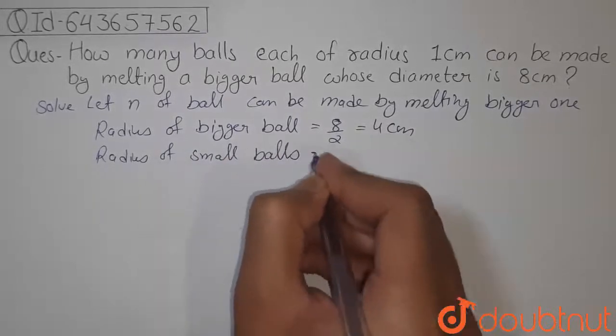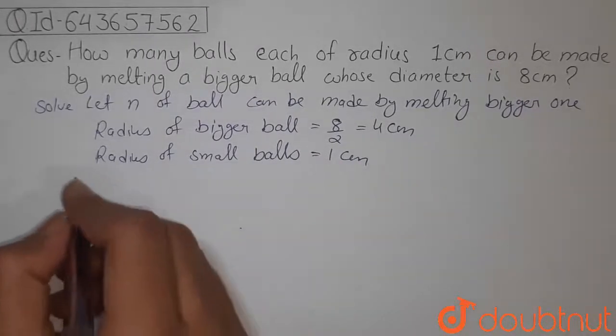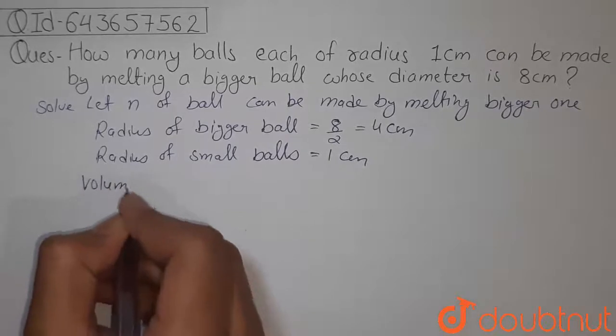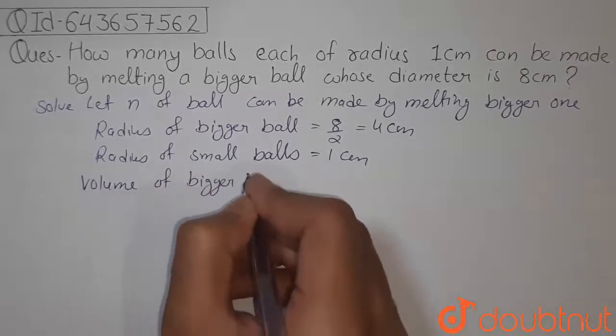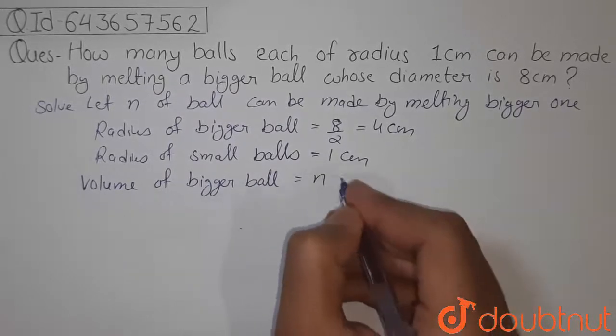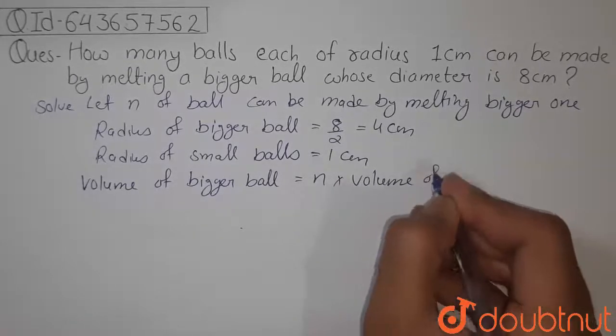Now we will use the fact that the volume remains constant, so volume of bigger ball is equal to n times volume of small balls.